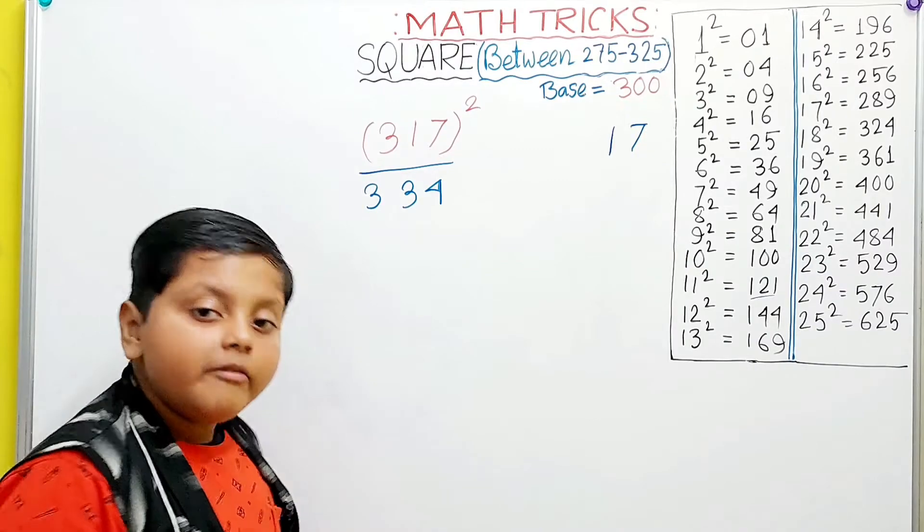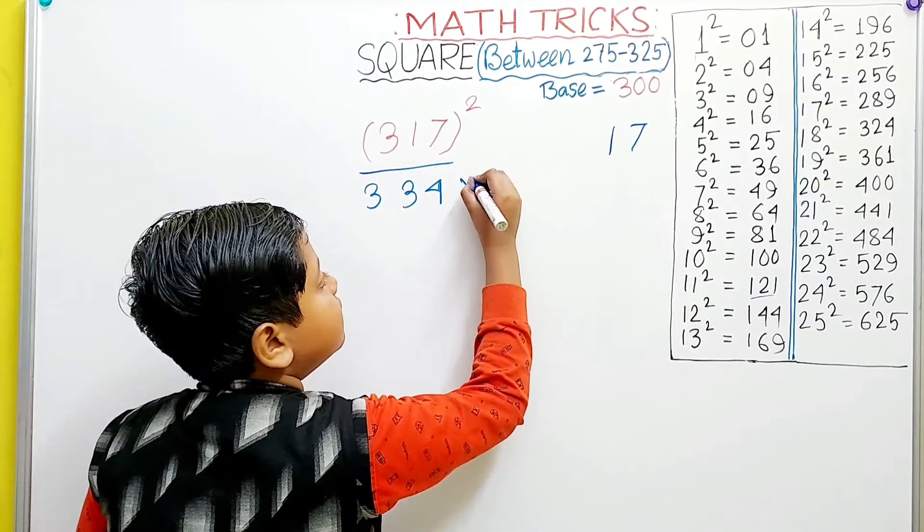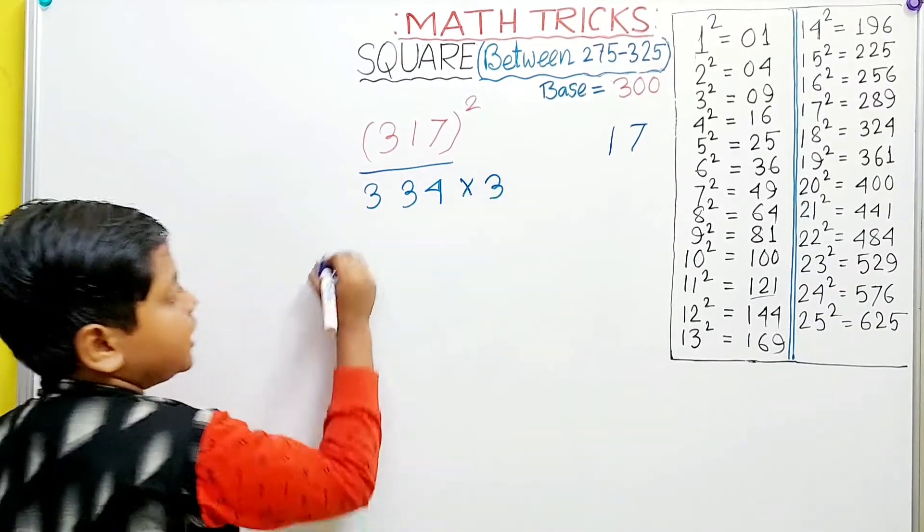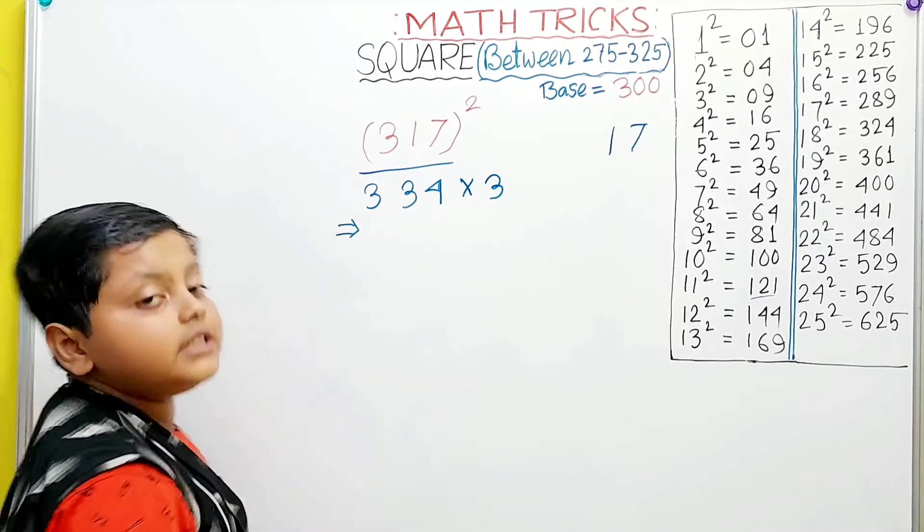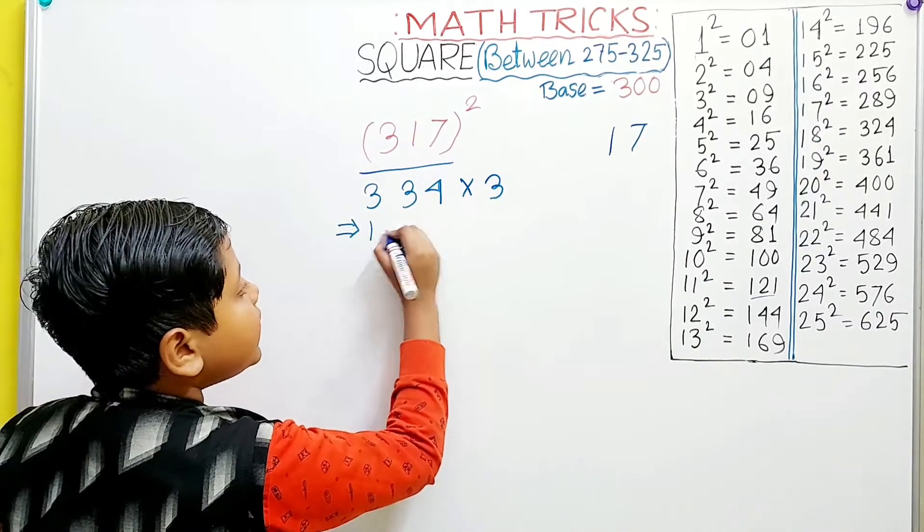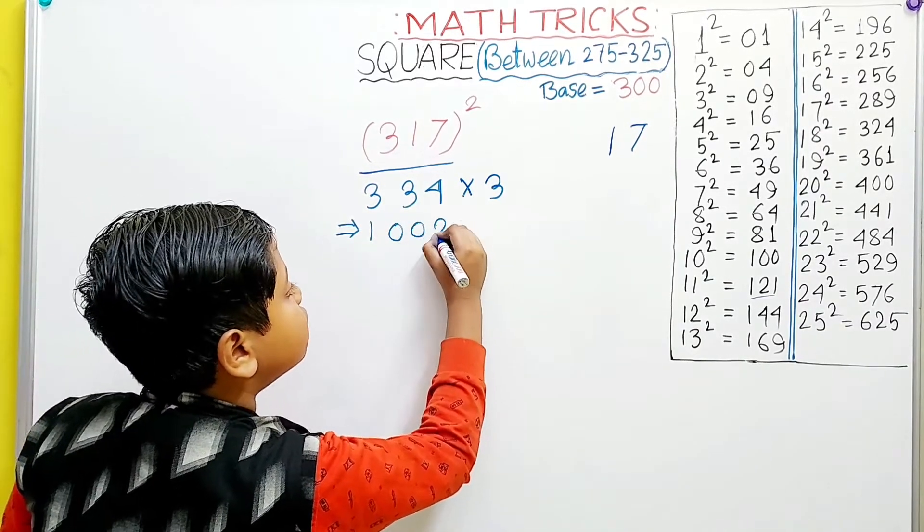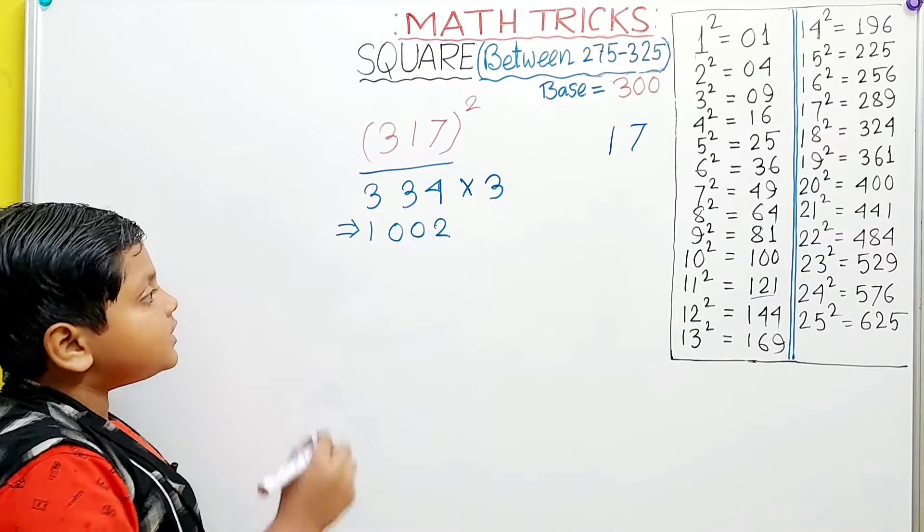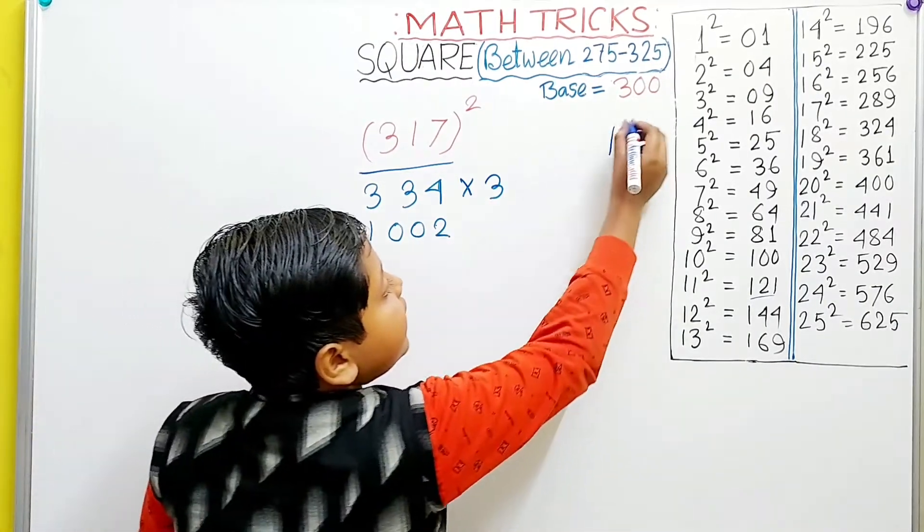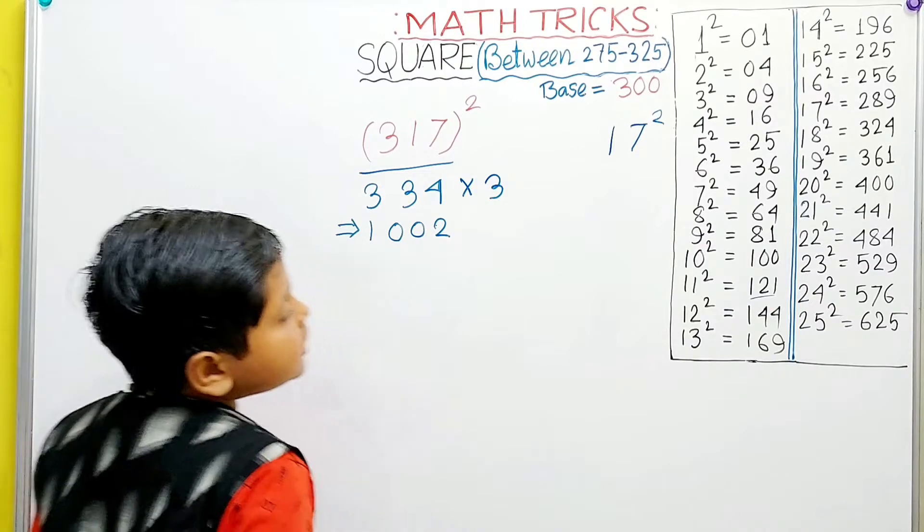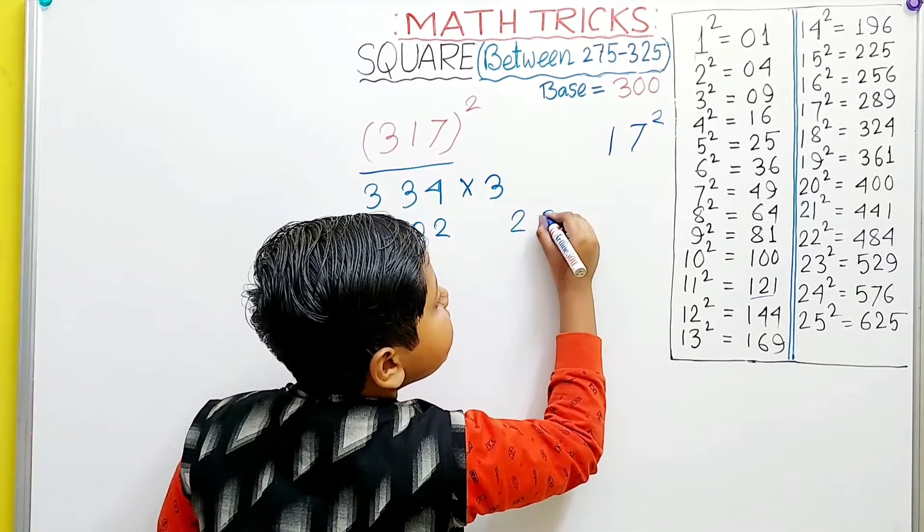Now we will multiply this with 3, which equals 1002. Next we have to square 17, which is 289.